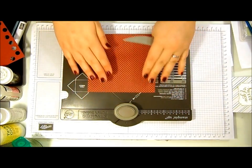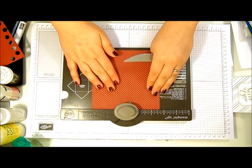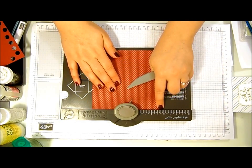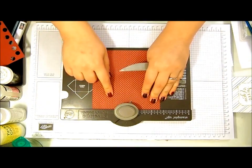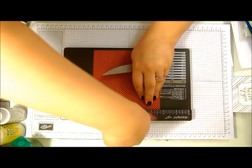So pop our cardstock in at two and three quarters of an inch, and the envelope punch board works by punching.